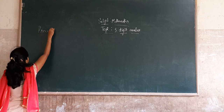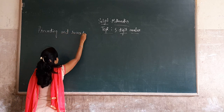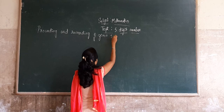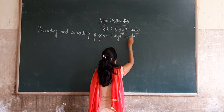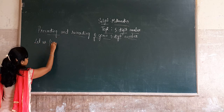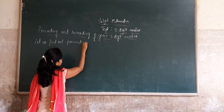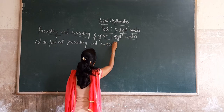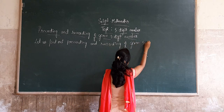So, let us begin. We will look at 4-digit numbers, 5-digit numbers, and 6-digit numbers. Let us find out the preceding and succeeding of the given number.